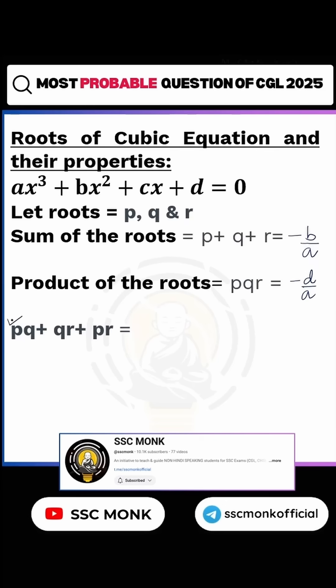Now, this is the third and most important thing that was asked in the first question. What is pq + qr + pr? It is equal to c/a. What is c? The coefficient of x. What is a? Coefficient of x³.